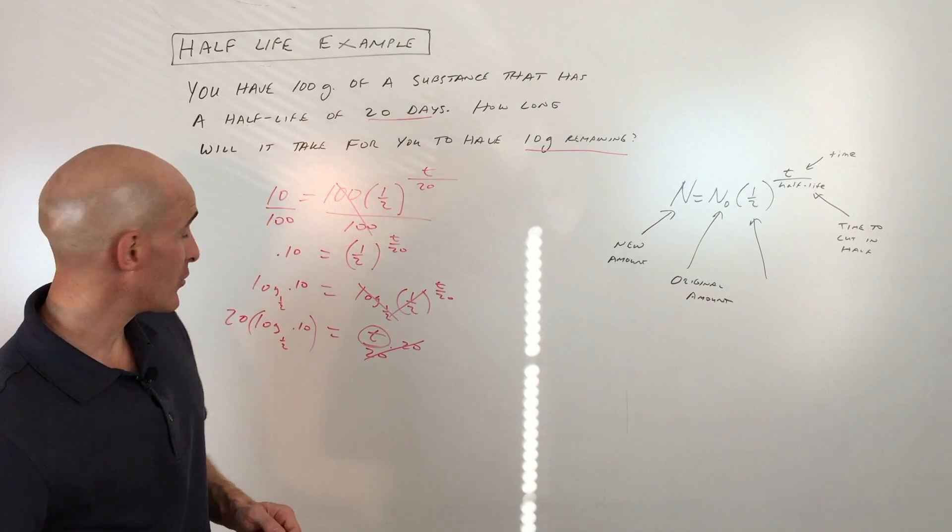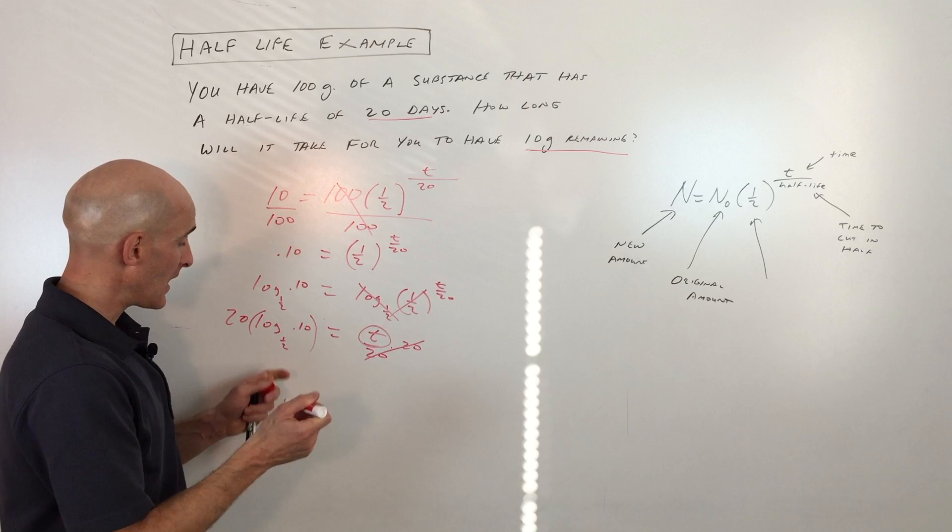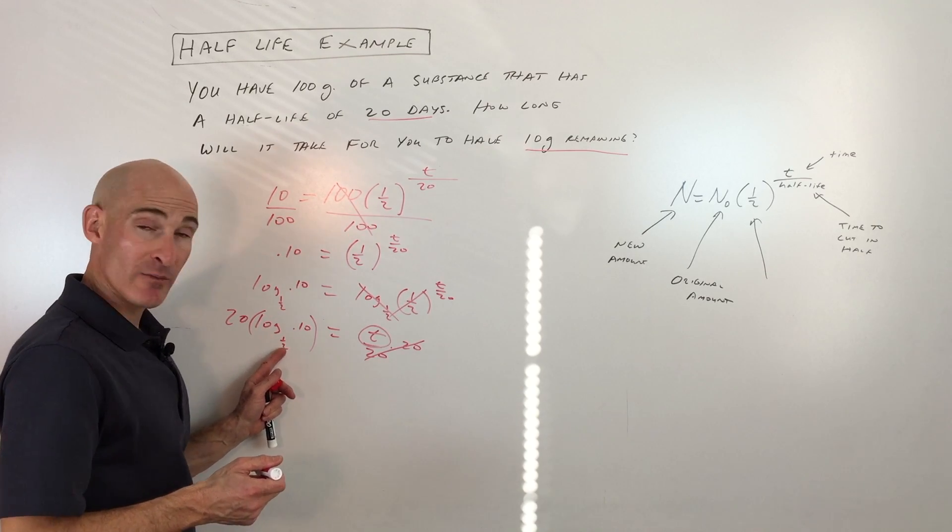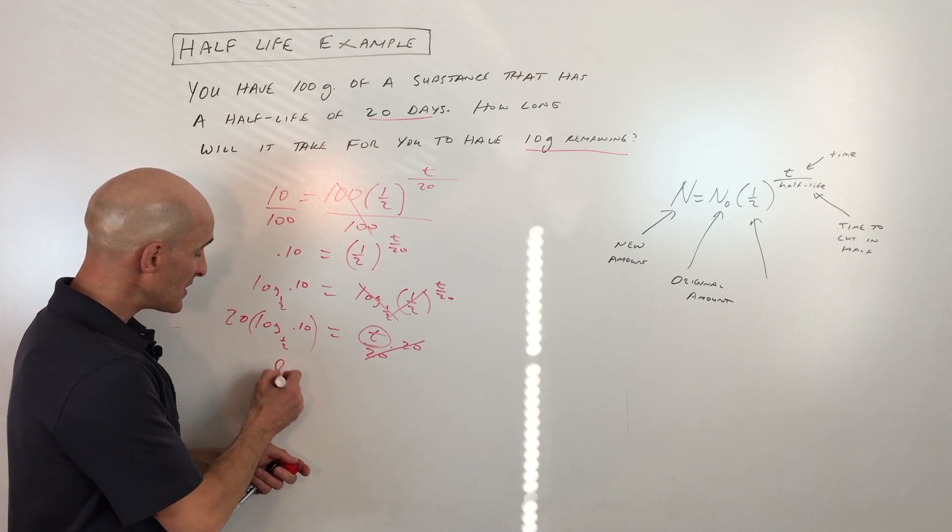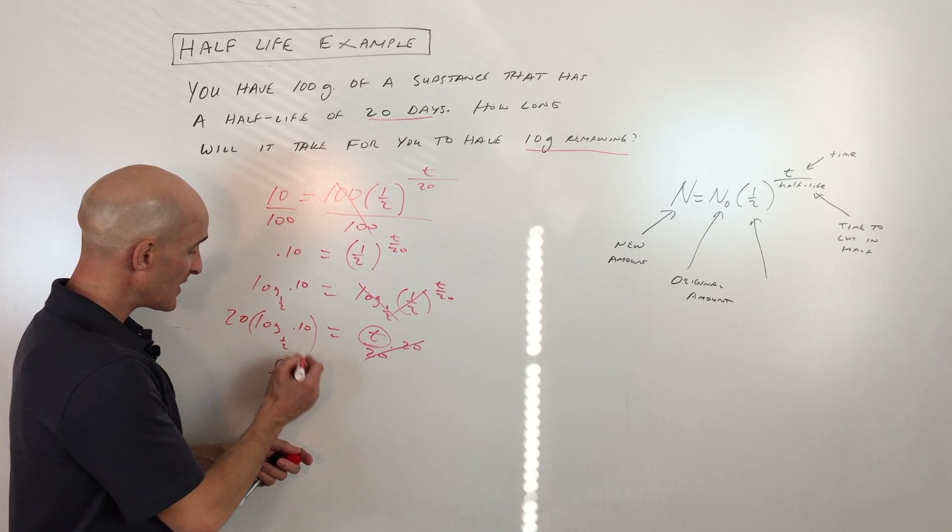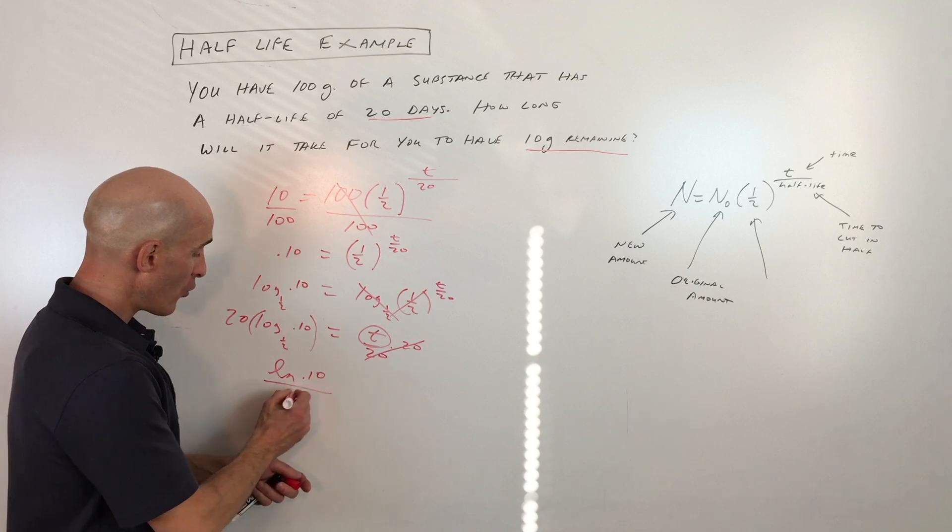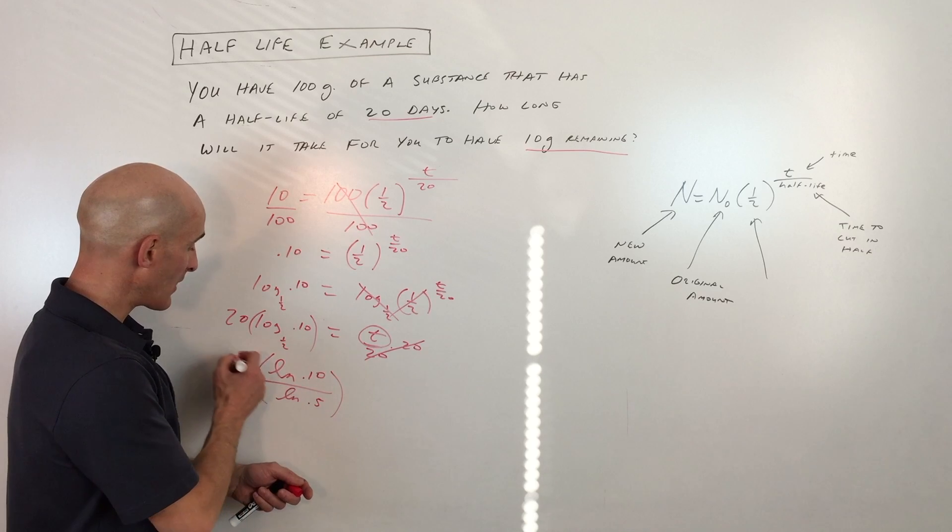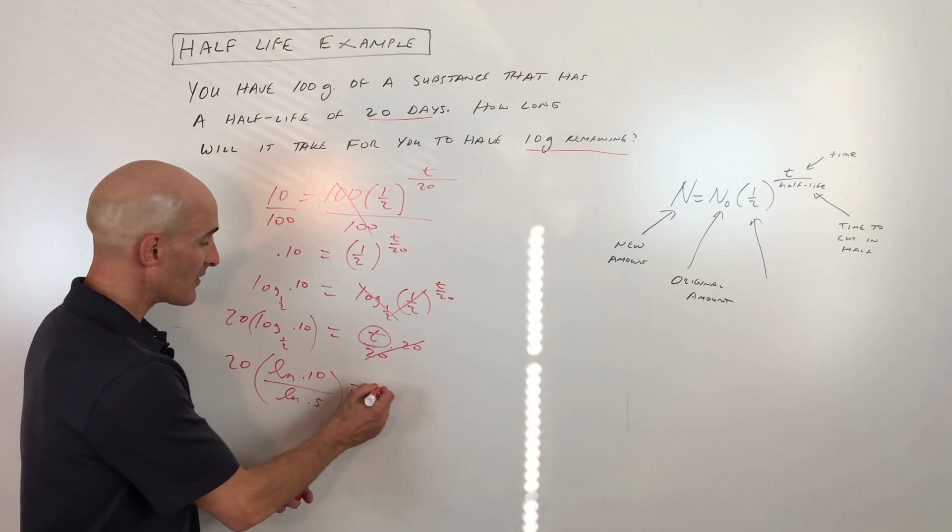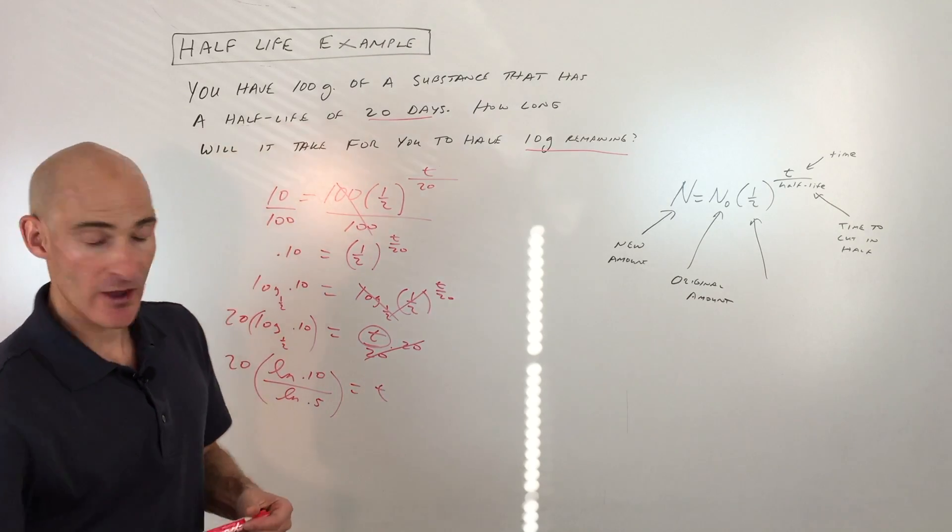And let's go to the calculator now. But a lot of calculators don't have the ability to take the log base one-half. They only have the common log base 10 and the natural log. So we can use the change of base formula by taking the natural log of 0.10 over the natural log of one-half, which is 0.5, and then multiply that whole quantity times 20. That will give us our time. So let's go to the calculator.